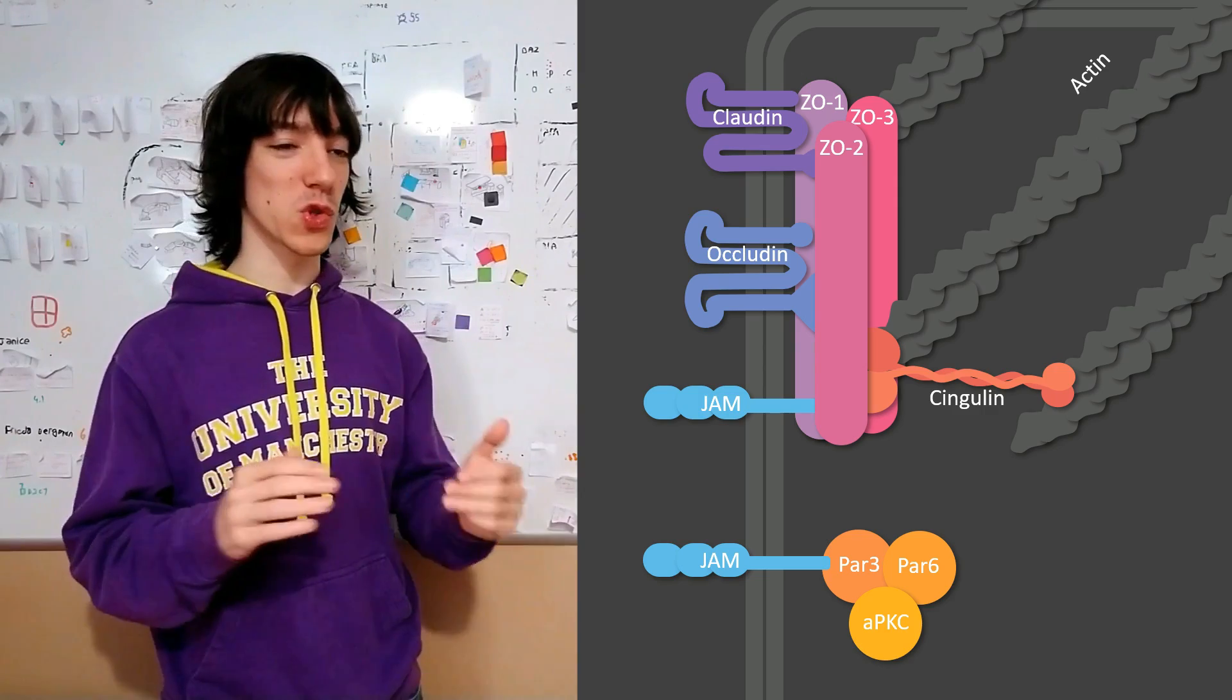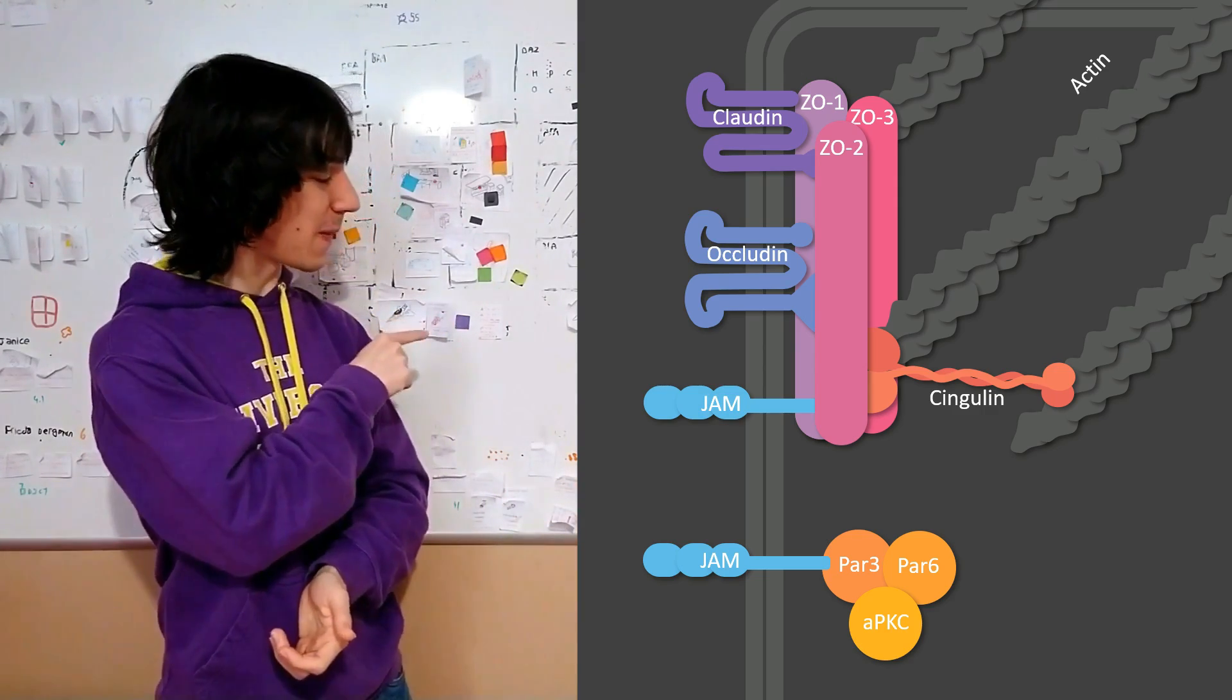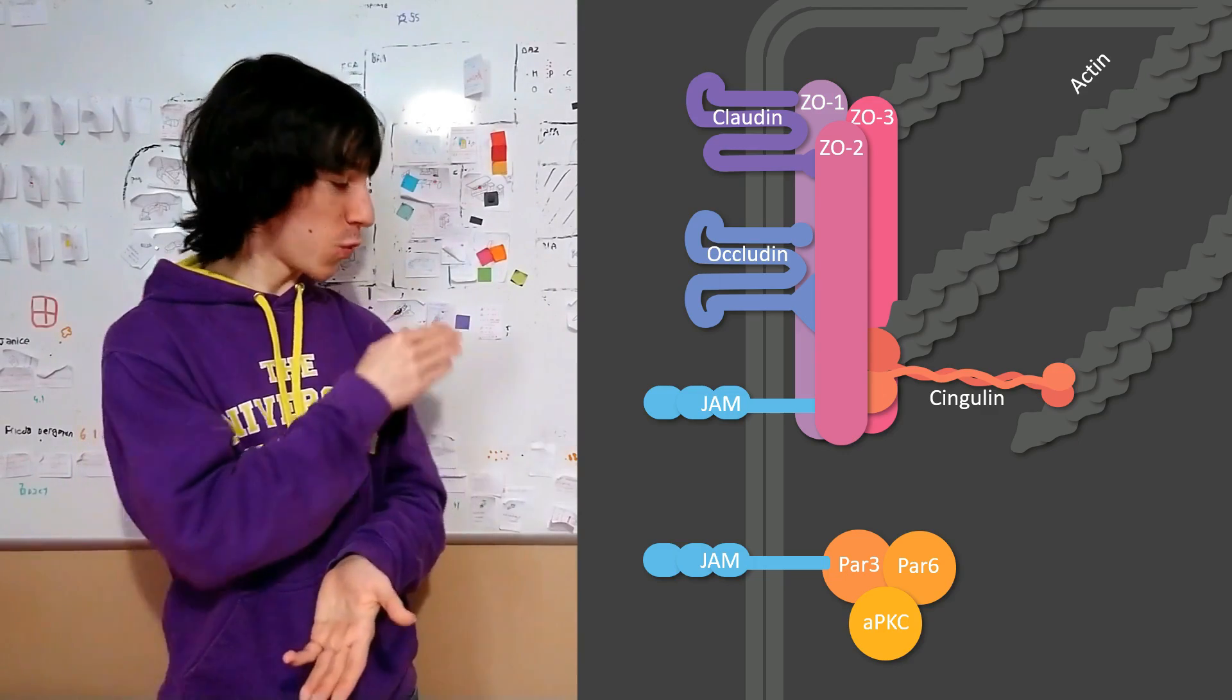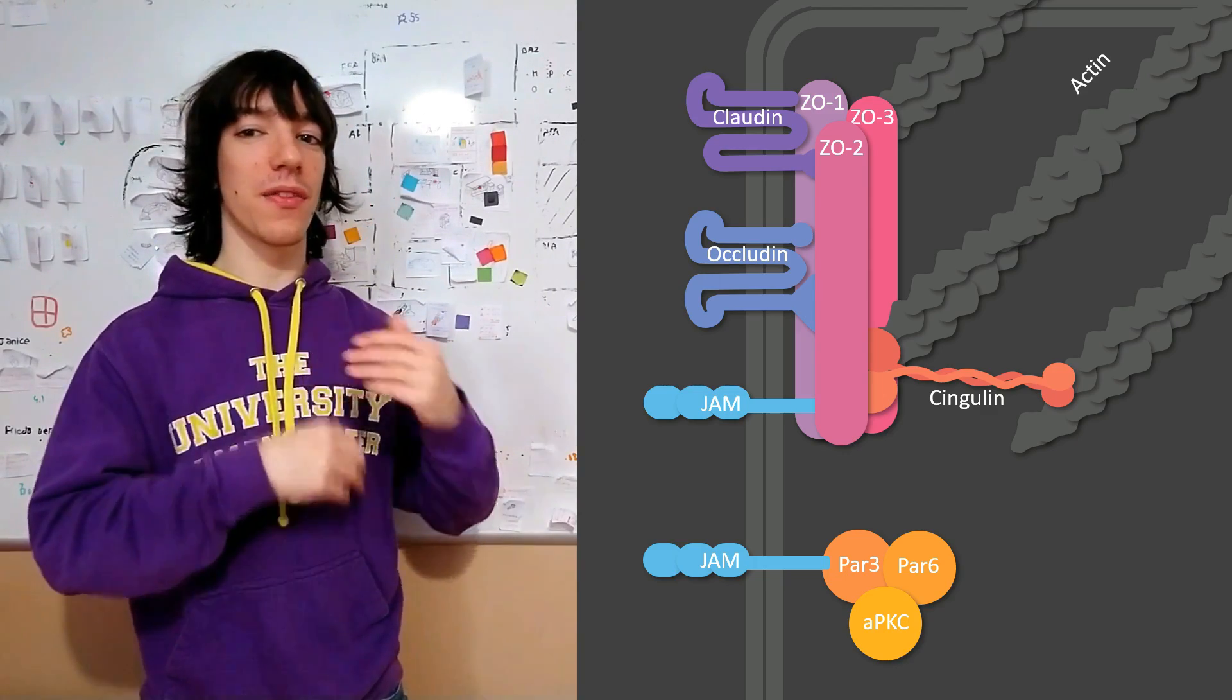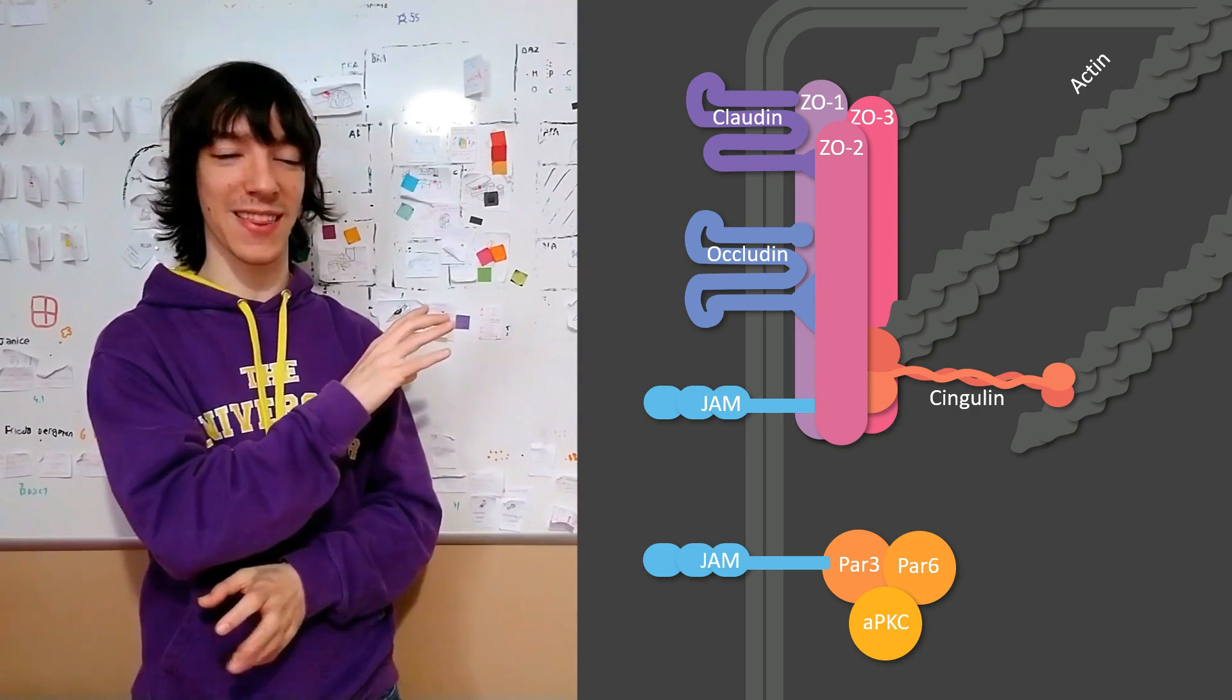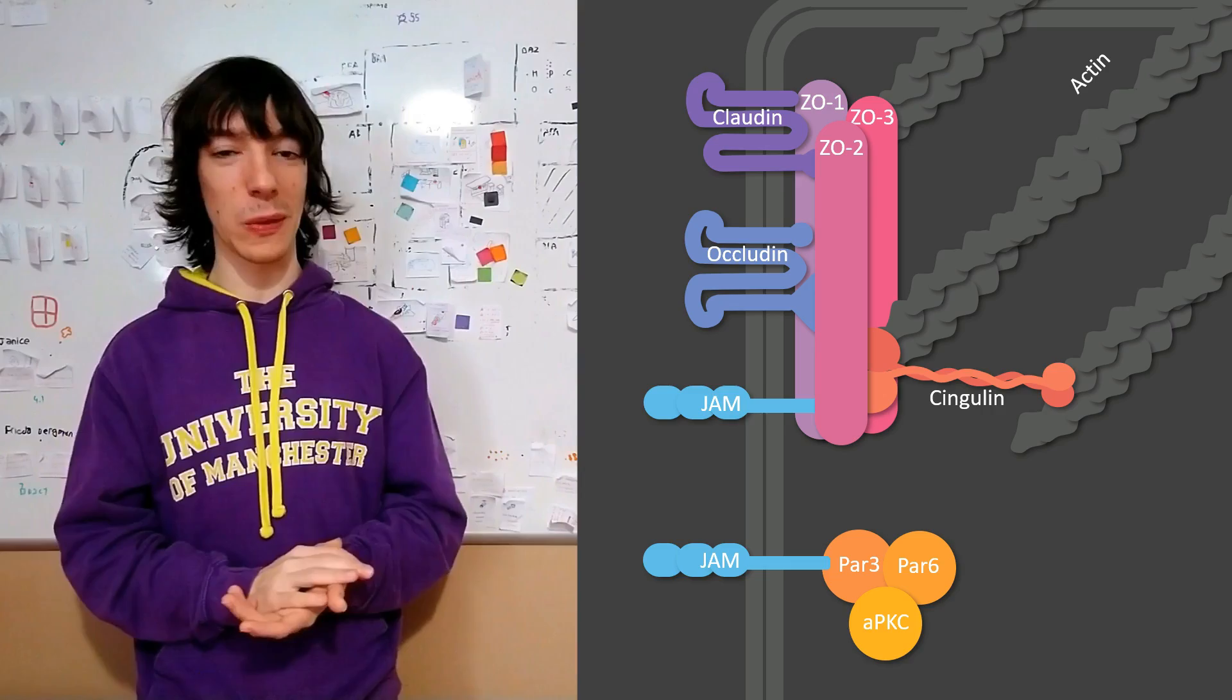And one way to control where it is, is by making it bind to JAM proteins. Of course, in invertebrates who don't have JAM proteins, there are other mechanisms to bring the PAR3-PAR6-aPKC complex to the apical side, but we will see them in future videos.